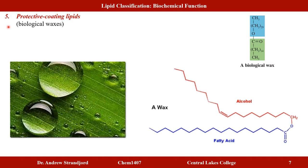The final classification based on function are the protective coating lipids, often called biological waxes. A protective coating lipid has a very long carbon chain, one ester function, and another very long carbon chain — both very non-polar and hydrophobic. Plants produce these biological waxes to repel water from leaves and branches, protecting them from being swollen by water.